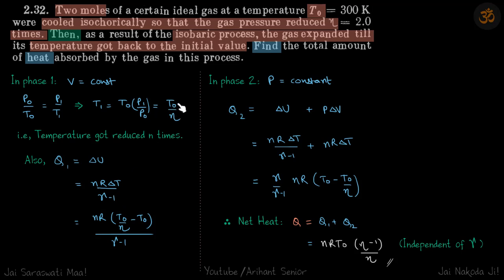Is equal to n R delta T by gamma minus one. So delta T now is final temperature minus initial temperature, and R upon gamma minus one. So this is Q1. Now in second phase, we have to expand the gas until the temperature gets back to its initial value.